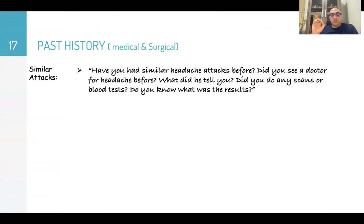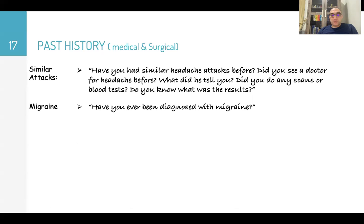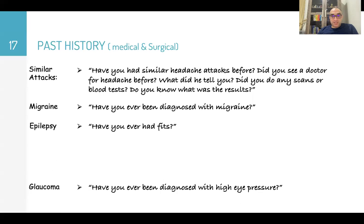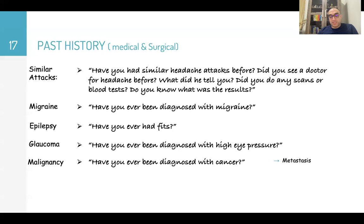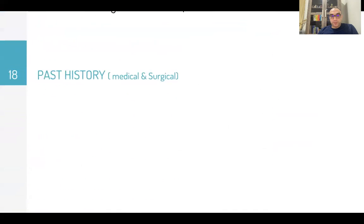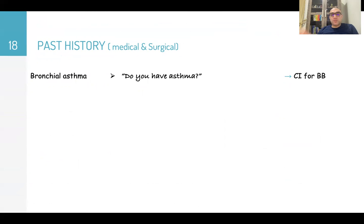After the presenting complaint, go to past history. Ask about similar attacks in the past: 'Have you ever had similar headache attacks before? Did you see a doctor for headache before? What did they tell you? Did you do any scans or blood tests?' Ask about migraine, epilepsy, glaucoma, and malignancy. Ask about HIV — thinking about CNS lymphoma or toxoplasma. Ask about bronchial asthma, because asthma is a contraindication for beta blockers, which are drugs of choice as prophylaxis for migraine.